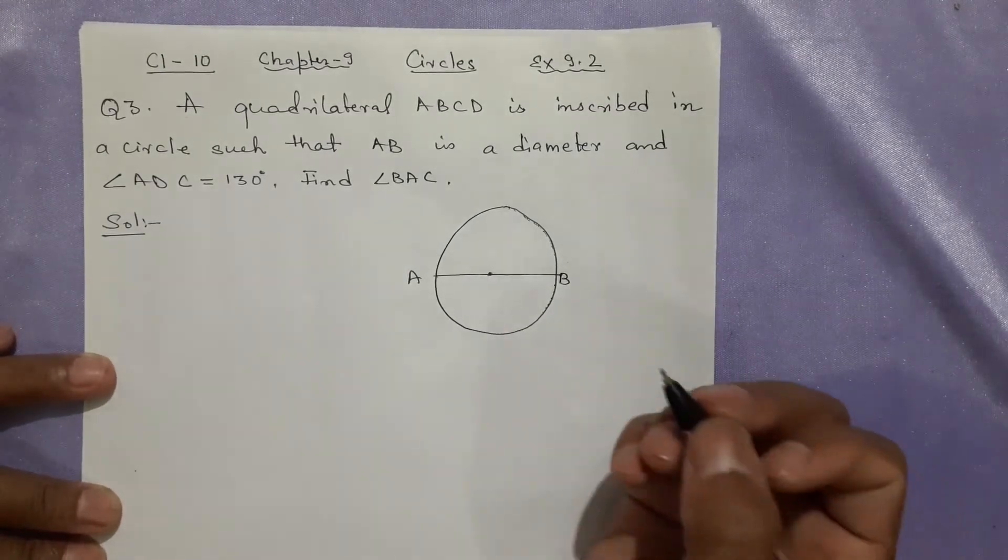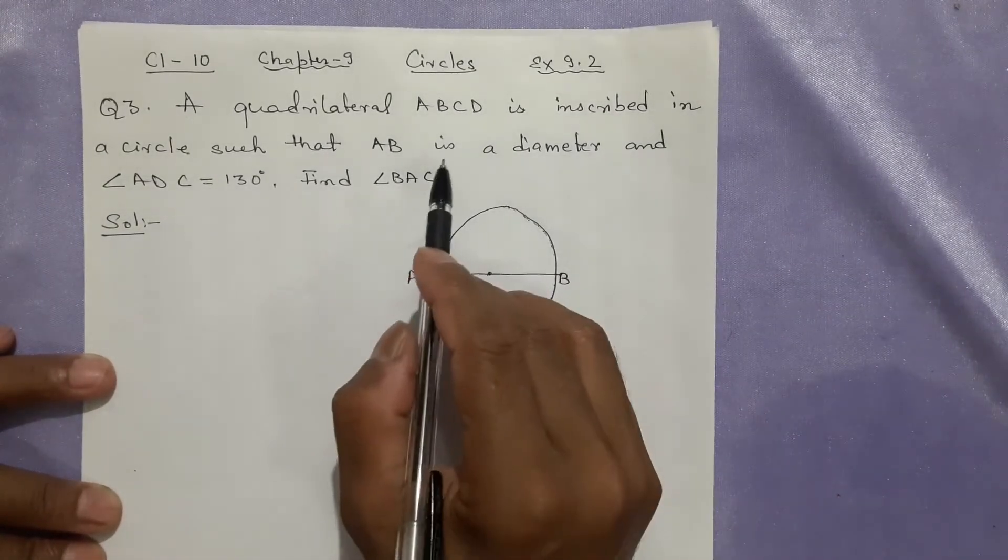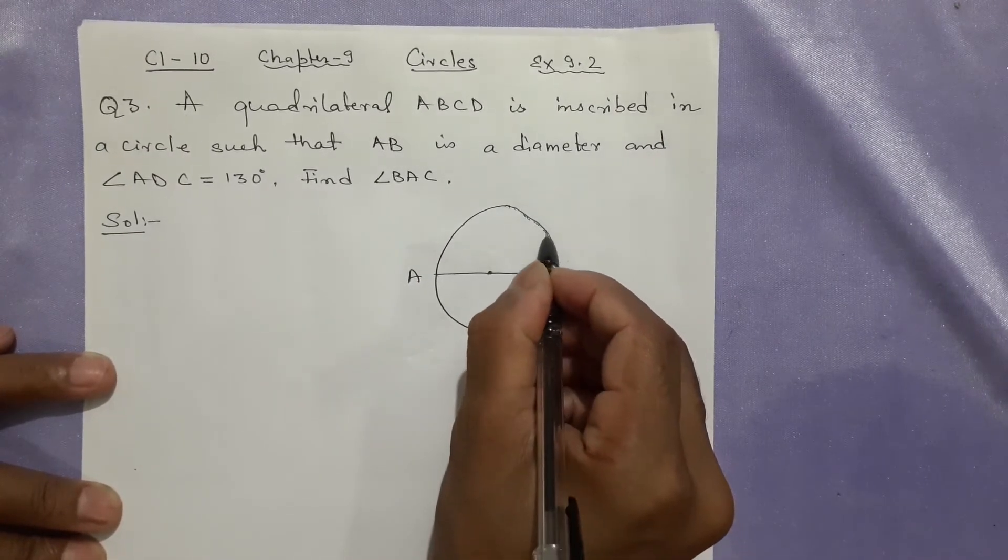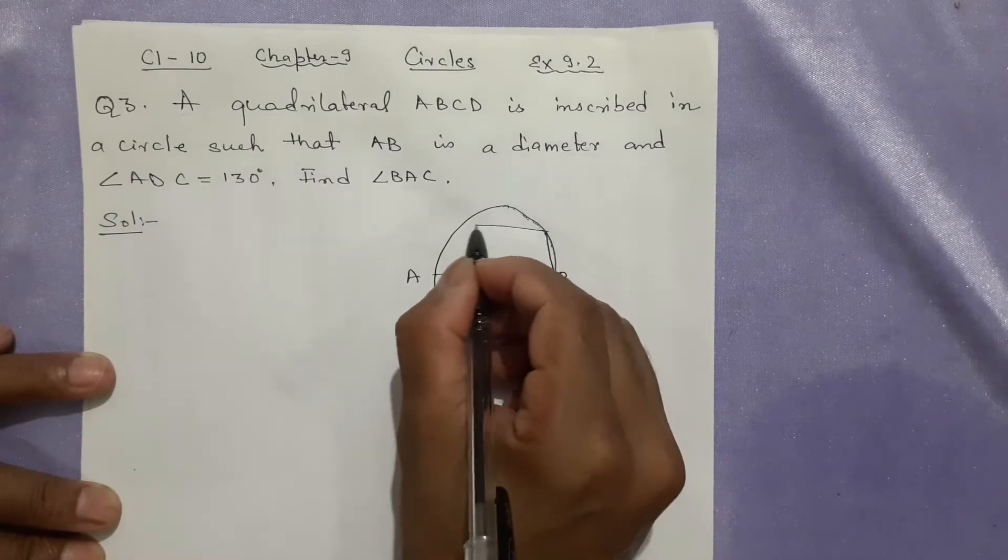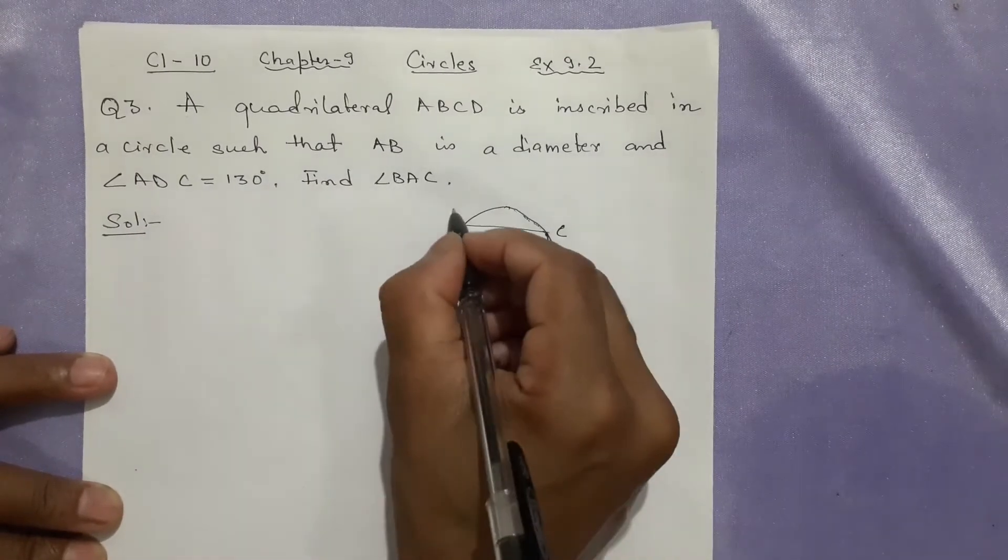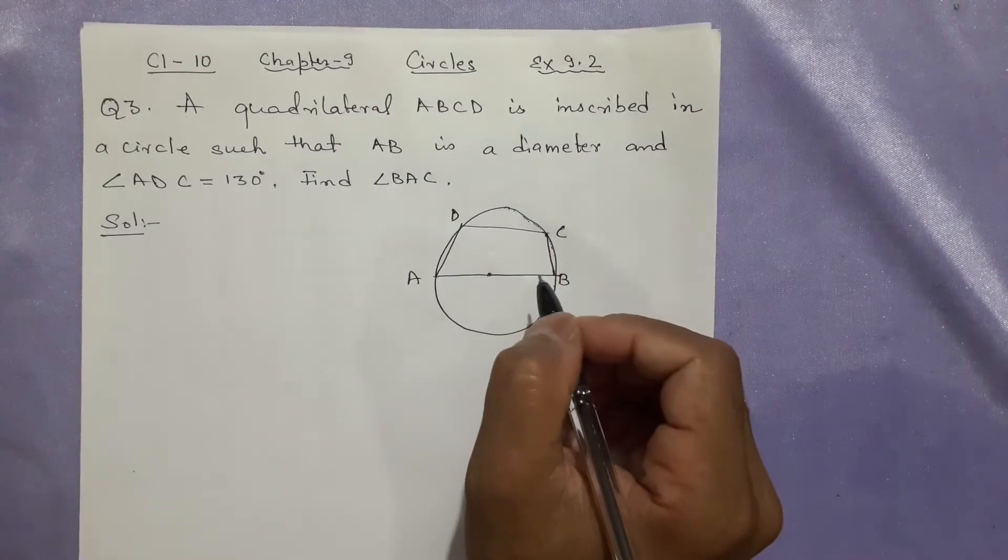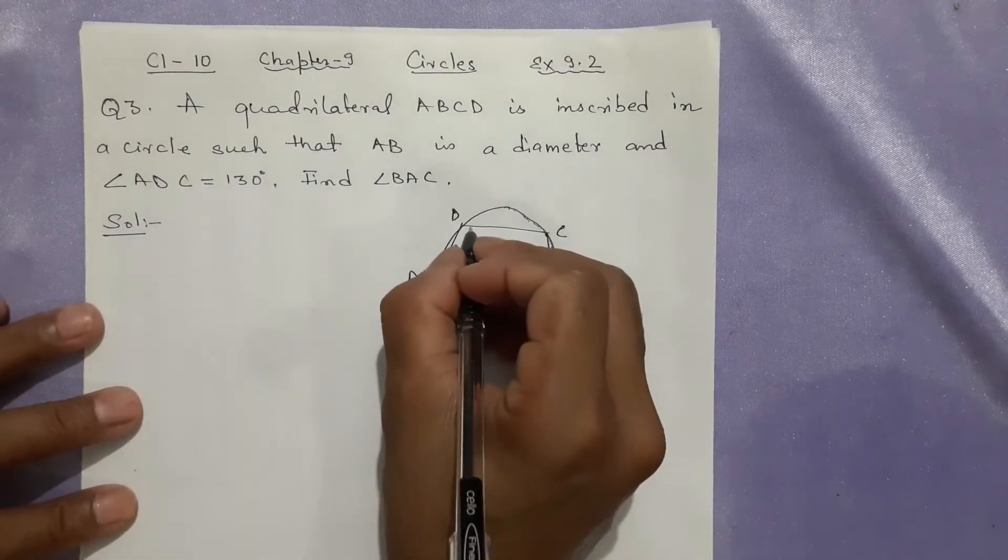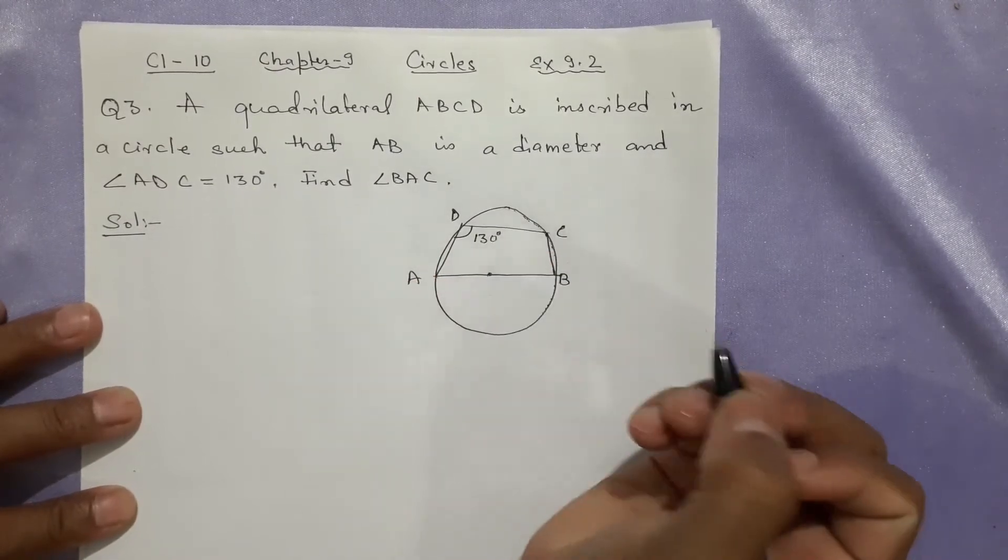Angle ADC... ABCD is the quadrilateral inside the circle. Angle ADC, this angle, is an obtuse angle of 130°.